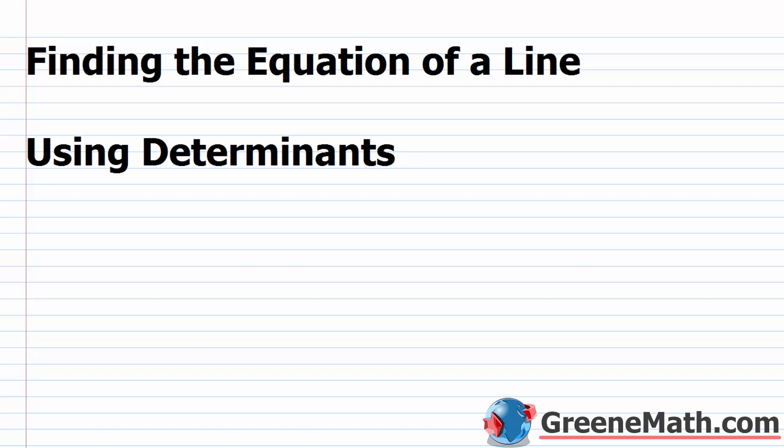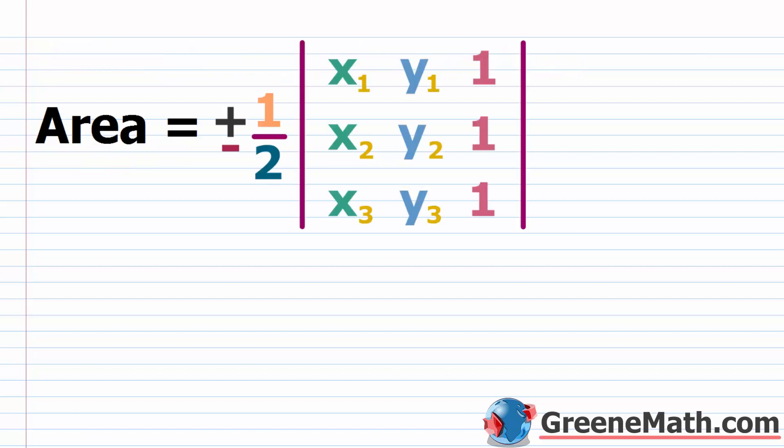In this lesson, we want to talk about finding the equation of a line using determinants. Over the course of the last two lessons, we've been working with a formula which uses determinants to find the area of a triangle given three vertices.